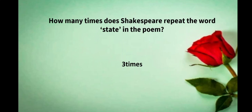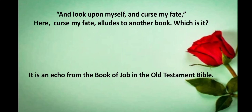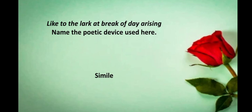Next: How many times does Shakespeare repeat the word 'state' in the poem? Answer: three times — this is very important. 'And look upon myself and curse my fate' — this alludes to which book? Answer: it is an echo from the book of Job in the Old Testament Bible. 'Like to the lark at break of day arising' — what poetic device is used here? Answer: a simile.